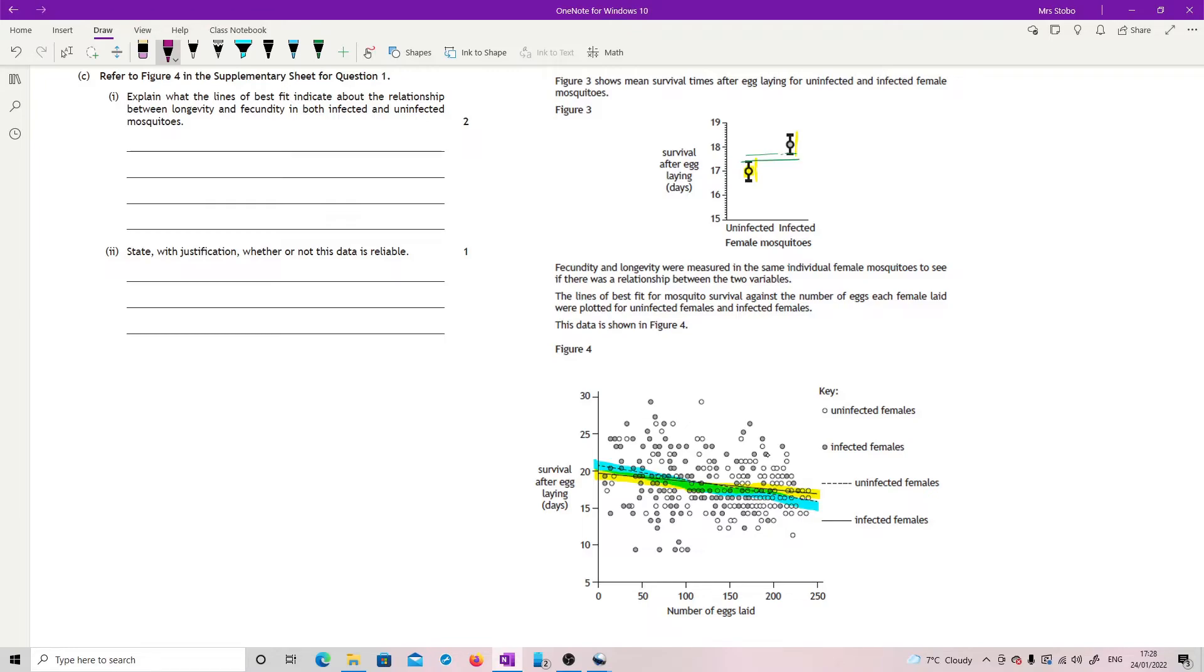And that's what you're looking to link in. So we're looking for increased eggs goes to decrease survival, can't spell survival. Which is a negative correlation to use nice descriptive statistic terms.